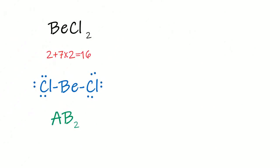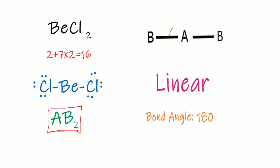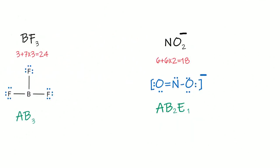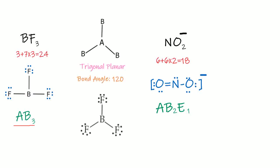We shall now discuss all these examples step by step. BeCl₂ has type AB₂. Any molecule with the type AB₂ will have a linear geometry and a bond angle of 180°. For BF₃, the type of molecule is AB₃. Any molecule with AB₃ type has a trigonal planar geometry — trigonal due to the three corners, and planar because all atoms are in one plane. The bond angle between atoms is 120°. I will show you in 3D models. The actual geometry of BF₃ is like this.